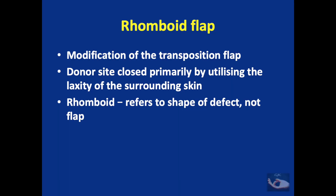One of the modifications of the transposition flap is the rhomboid flap. The modification is that in the usual transposition flap, the donor site is closed with a skin graft. Here, in the rhomboid flap, the donor site is closed primarily by utilizing the laxity of the surrounding skin. It must be remembered that the term rhomboid refers to the shape of the defect and not of the flap.